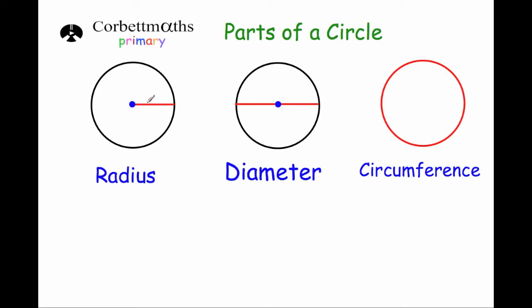And just remember, if you know what the radius is, and you want to find the diameter, just double it, or add it to itself. And if you know what the diameter is, and you want to find what the radius is, just divide it by 2. And that's it.